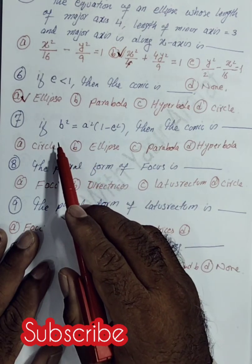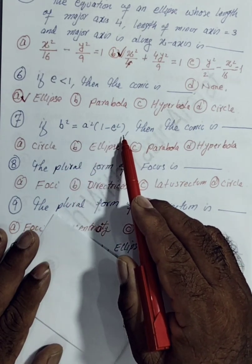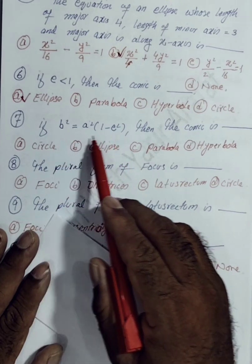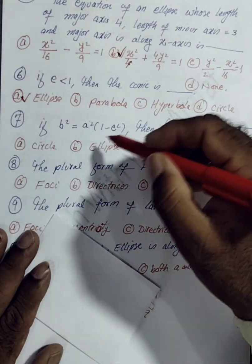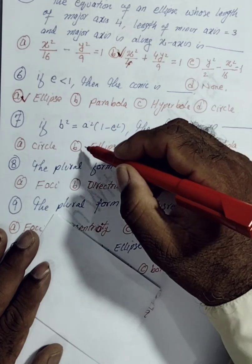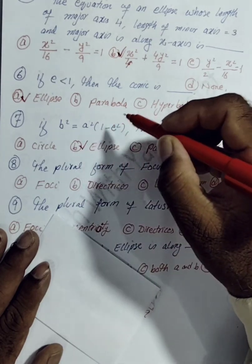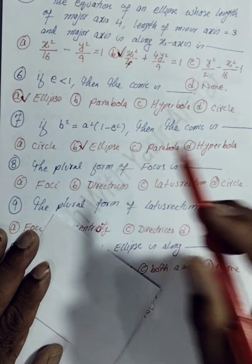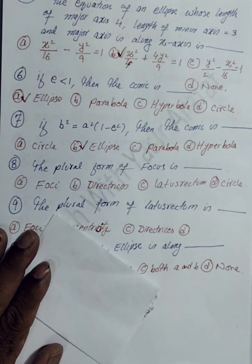The seventh MCQ: B² = A²(1 − E²). This is the formula relating A, B, and E in an ellipse. So option B is correct for the seventh MCQ.